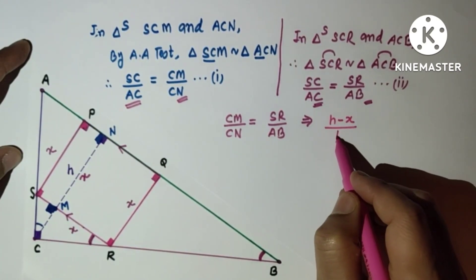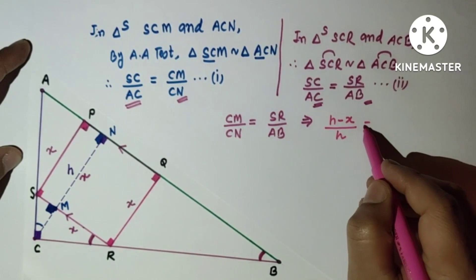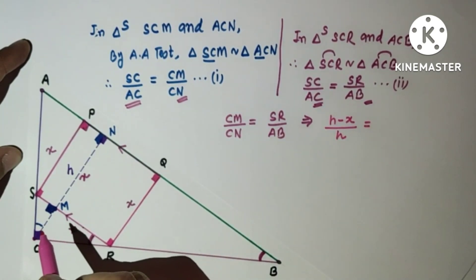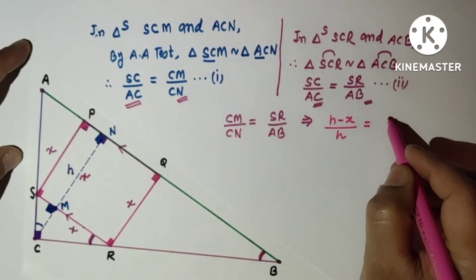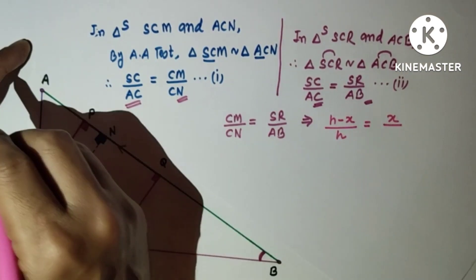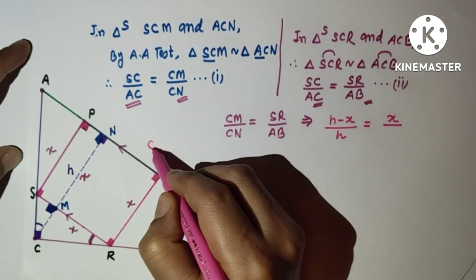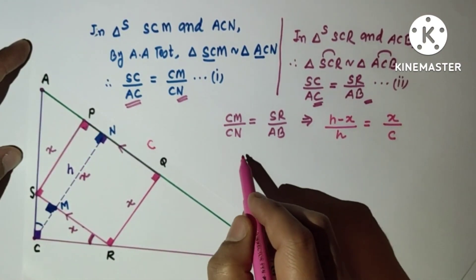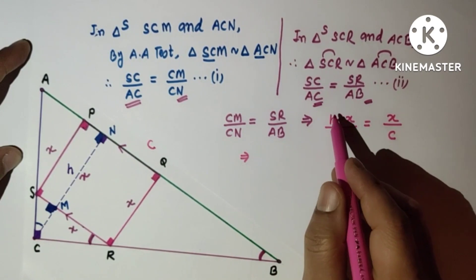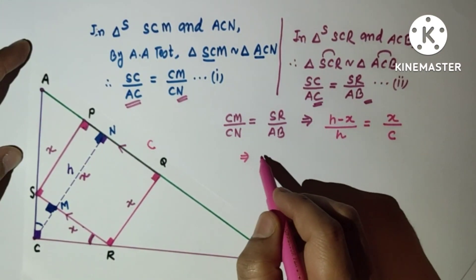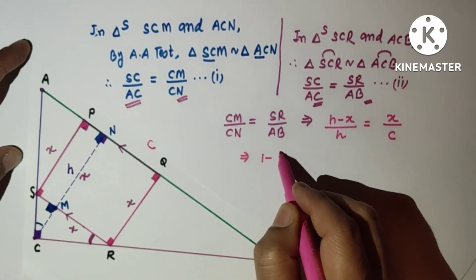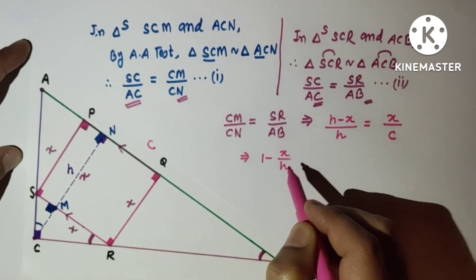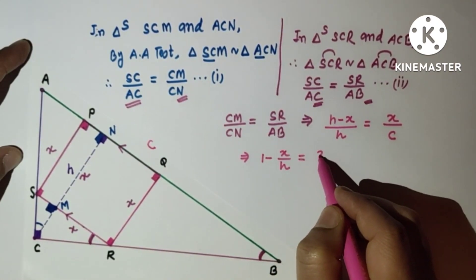AB is c. We can write (h-x)/h = x/c. Dividing both terms of the numerator: h/h is 1, so 1 - x/h = x/c.